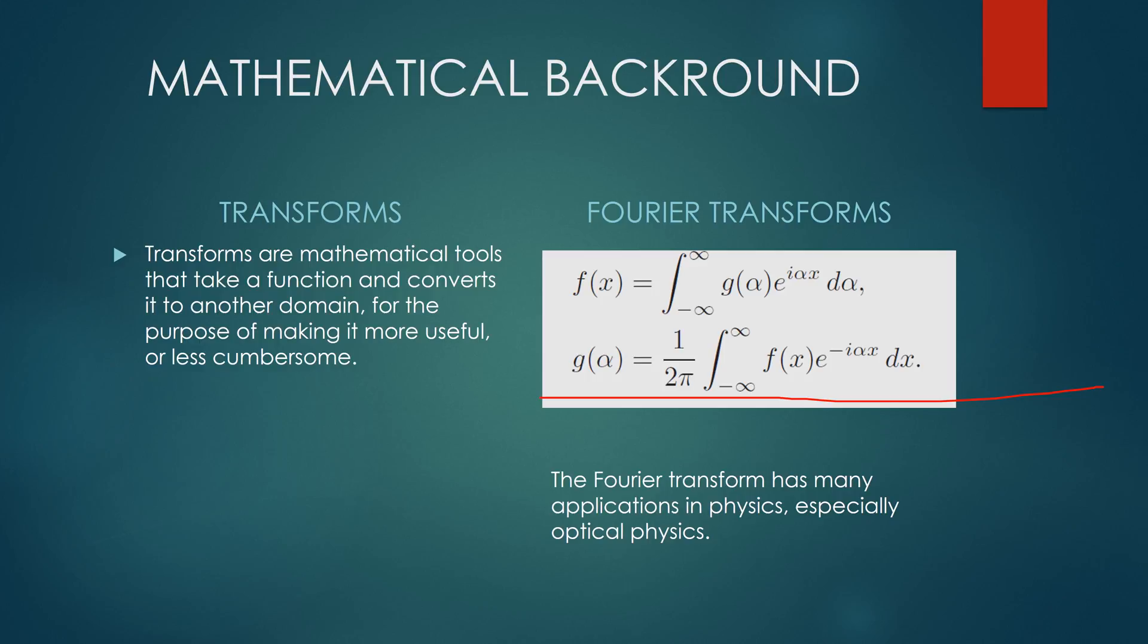An example on how to use these formulas would be to let f of x be a time function, so it would be f of t, and then g of alpha would be a frequency function, so g of nu. You can take f of x and transform it into the frequency domain and turn it into g of alpha with these two functions and vice versa.